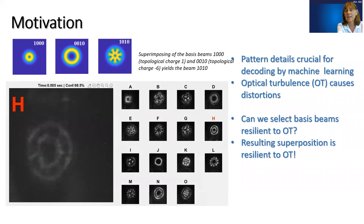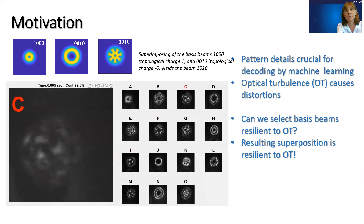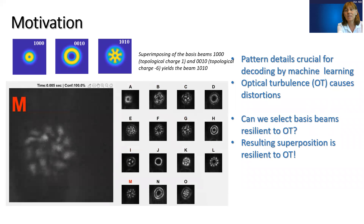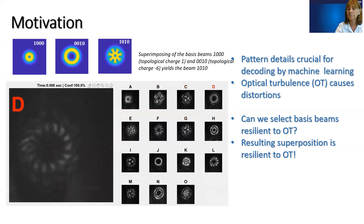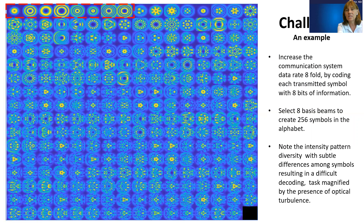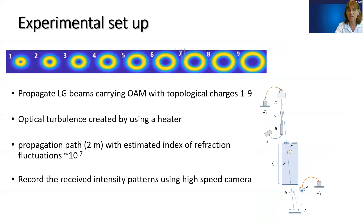The motivation here is very clear: can we select basis beams that are resilient to optical turbulence, considering the value of machine learning for decoding? We suggest that the resulting superposition will also be resilient to optical turbulence. This is the 256-symbol alphabet created by eight basis beams, and clearly some of the intensity details are intricate — any distortion would confuse one message from another. So we are very interested in which basis is best suited for our alphabet creation.